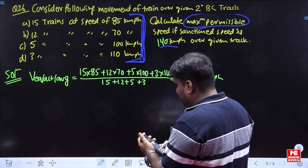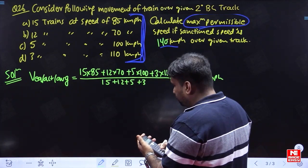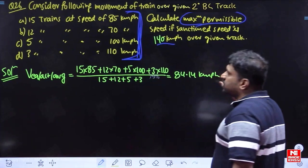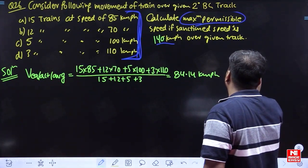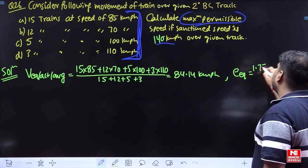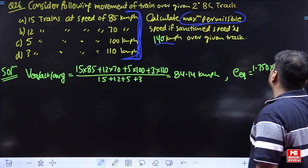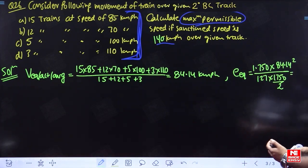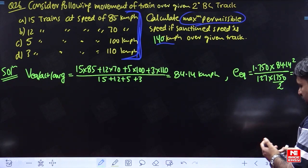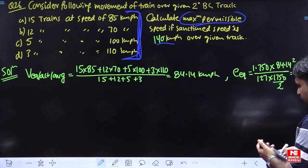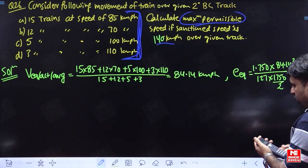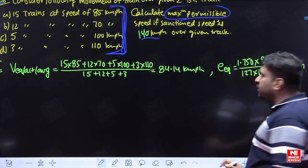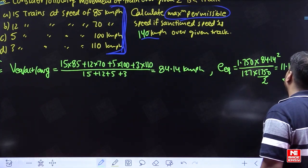This is the V-equilibrium. The equilibrium super elevation will be: e = 1.750 × V² / (127 × R), where R = 1750/2. So: 1.750 × 84.14² / (127 × 875). This comes out to be 11.11 centimeters. You have provided only 11 centimeters of super elevation, which is lesser than 16.5, so completely fine.